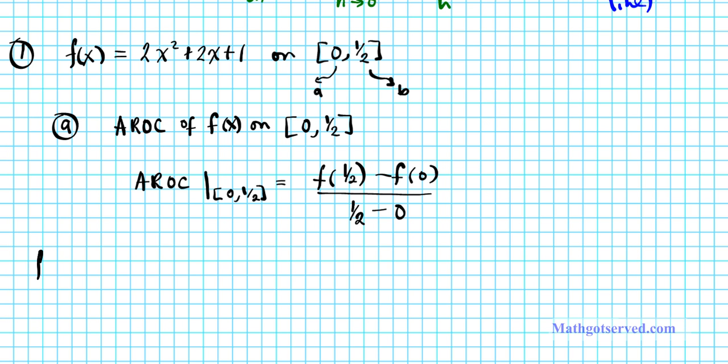So let's rewrite it f of b, which is f of 1 half. We simply input 1 half into the function. So we have 2 times 1 half squared plus 2 times 1 half plus 1. 1 half squared is 1 fourth times 2 is 1 half plus 2 times 1 half is 1 plus 1. So this gives us 5 over 2.